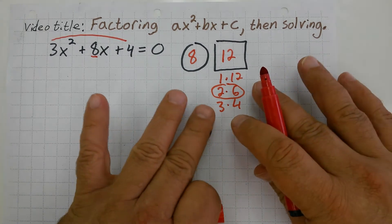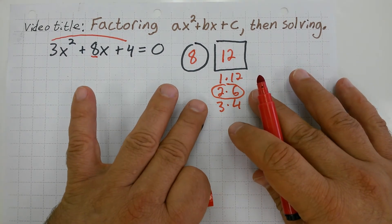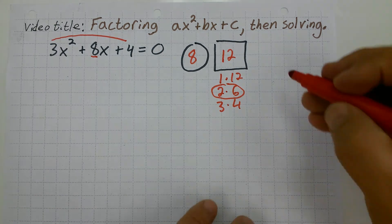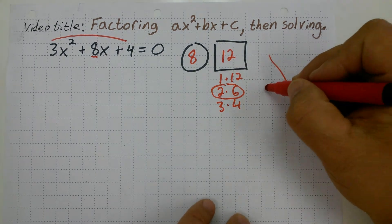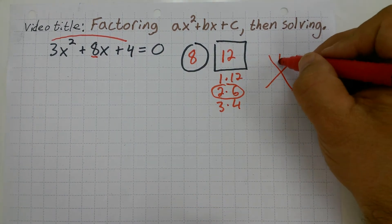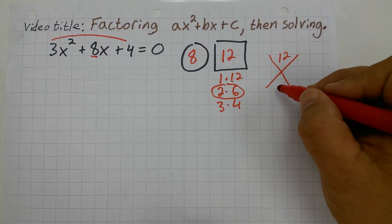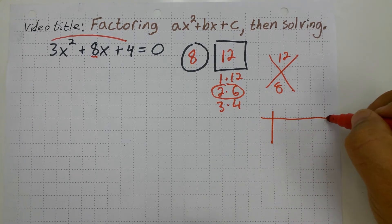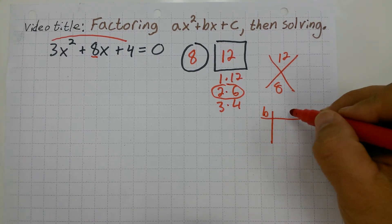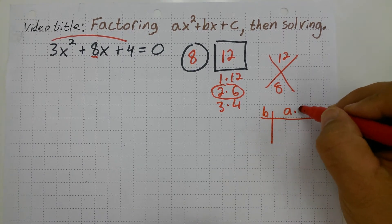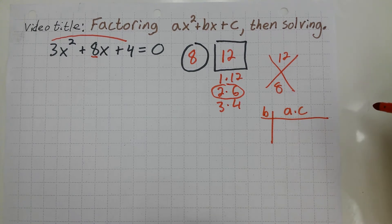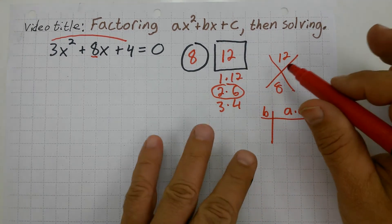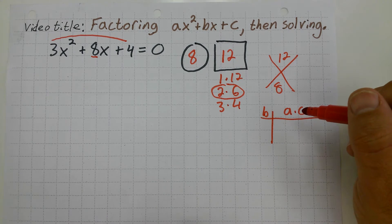You cannot have a method of factoring without doing this process. Some people call them X factors and place the 12 on top and the 8 in the middle. Other people make a little table and label this B and this A times C. These are all the same thing — this is the actual thought process.